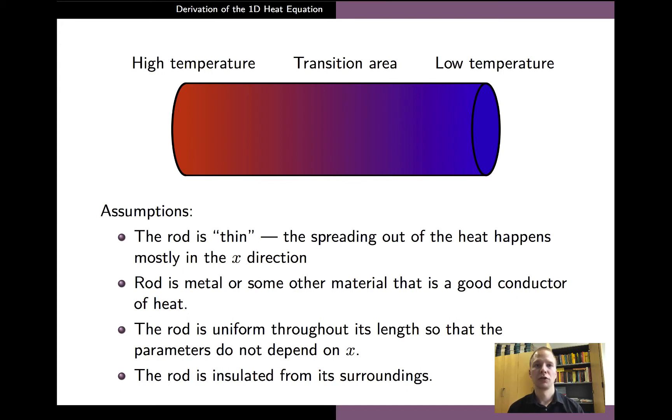We also assume that the rod is made of metal or some other material with good heat conductivity properties. And as already mentioned, we assume that the physical properties of the rod, such as the conductivity of heat and mass density, remain constant throughout its length. And finally, we assume that the rod is insulated from its surrounding environment so that the amount of heat escaping from the rod through its surface is small compared to the diffusion of heat inside the rod.